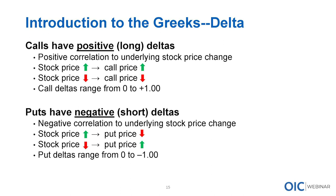When we look at calls - calls have positive long deltas. They have positive deltas because when the stock goes up, you'll make money. There's a positive correlation to the underlying stock price change: stock price goes up, your call price goes up; stock price goes down, your call price goes down. Call deltas range from zero to plus 100. When keeping everything equal, when the stock price goes up, you would expect your call price to go up. When the stock price goes down, you can expect your call price to decrease in an equal and opposite manner.